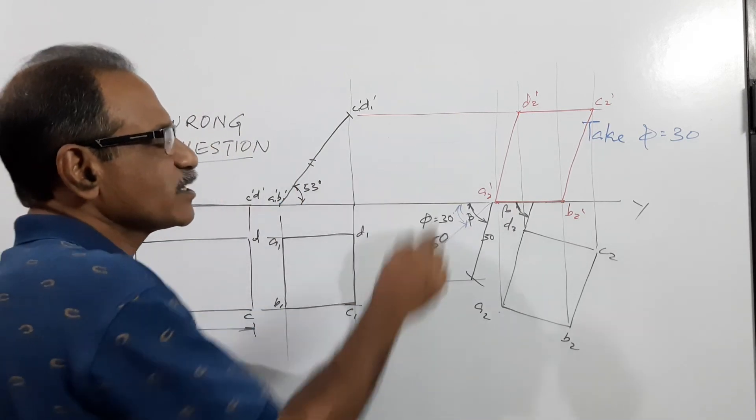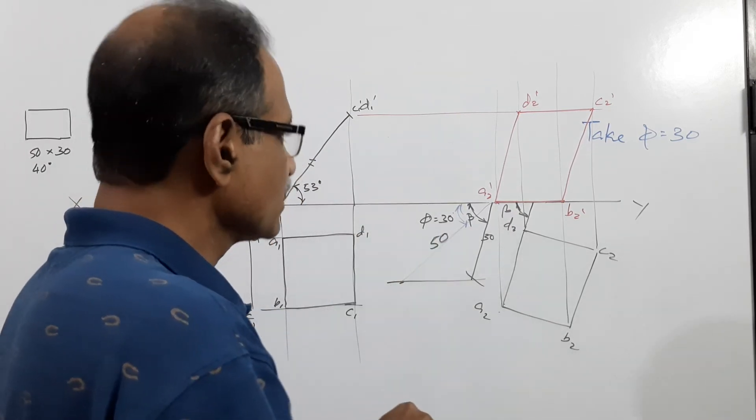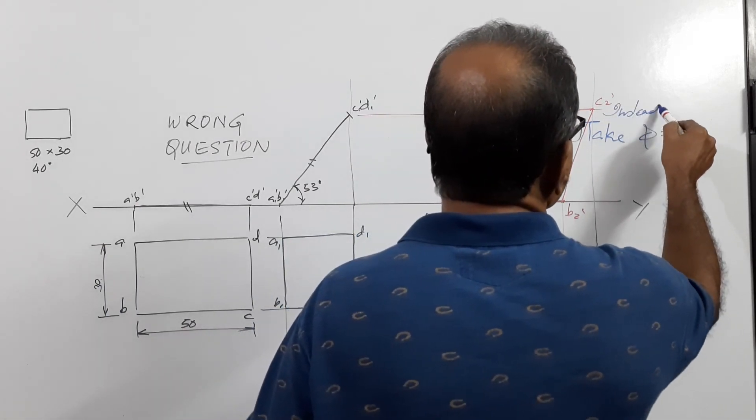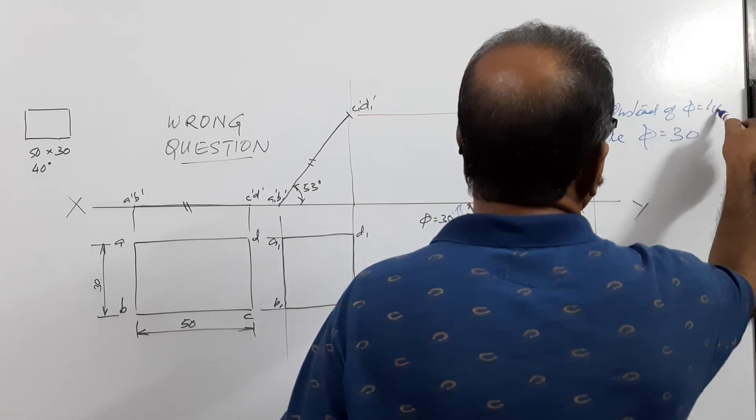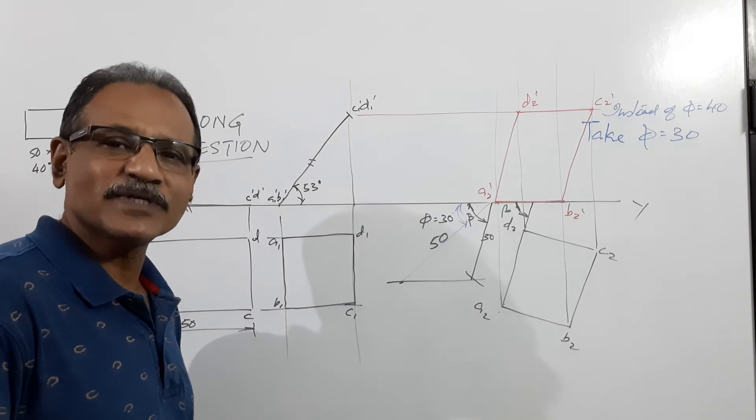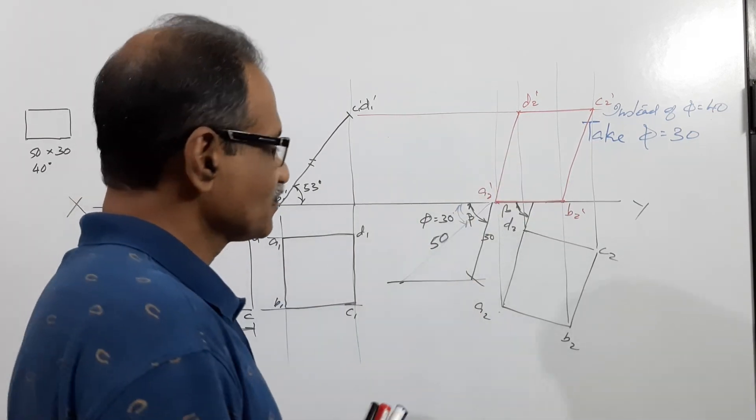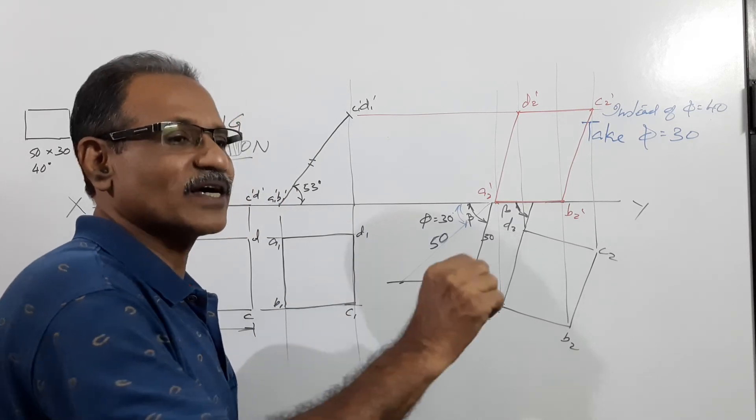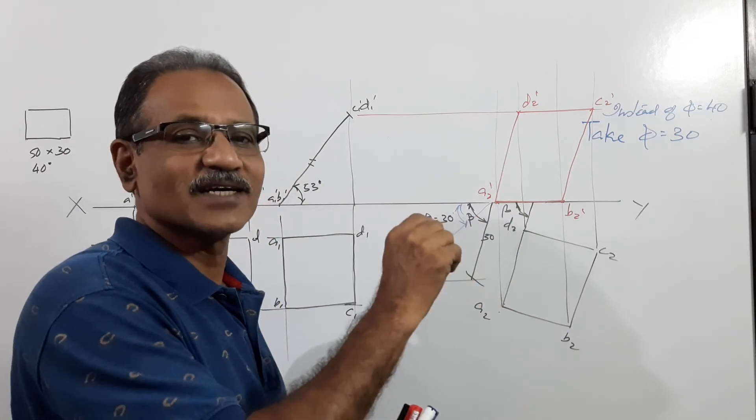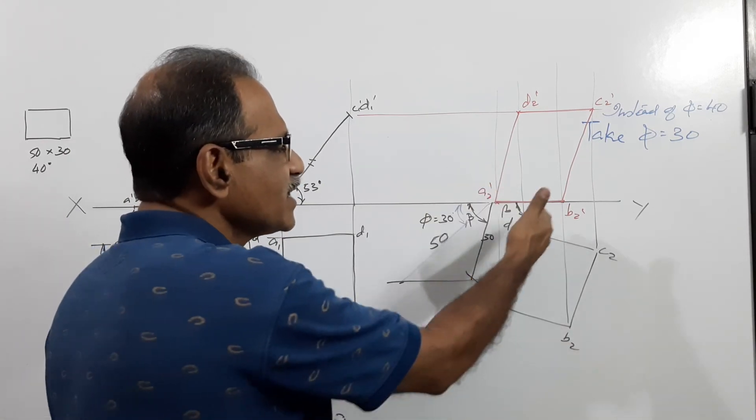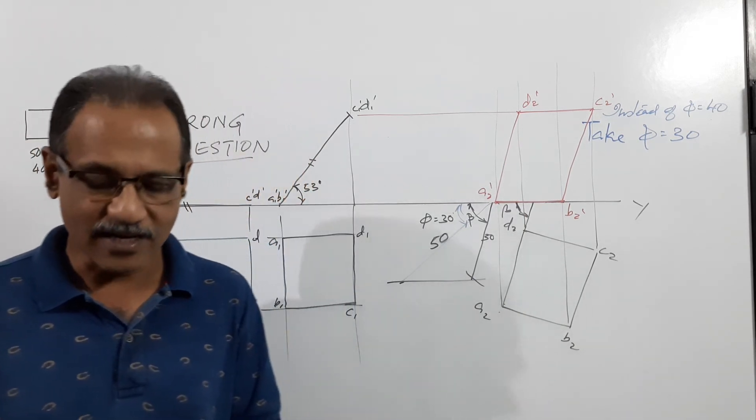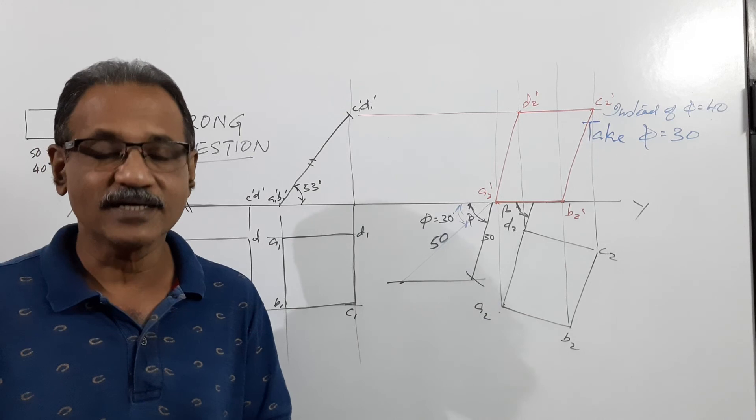The other option for a student is take beta equal 40. Phi is given as 40, you have to write phi, the value of phi cannot be used in this drawing. So take, assume beta equal to 40, and then with that beta equal to 40 you can draw this. That is another solution. So such things happen when the examiner doesn't verify the values.